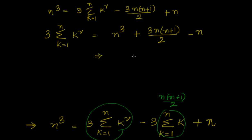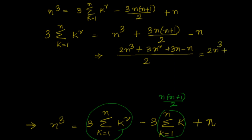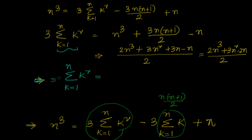Let us simplify. Taking 2 as LCM gives 2n cube plus 3n square plus 3n minus 2n, divided by 2, which equals 2n cube plus 3n square plus n, divided by 2. So sigma k square equals (1/3)(1/2) times n times (2n square plus 3n plus 1).